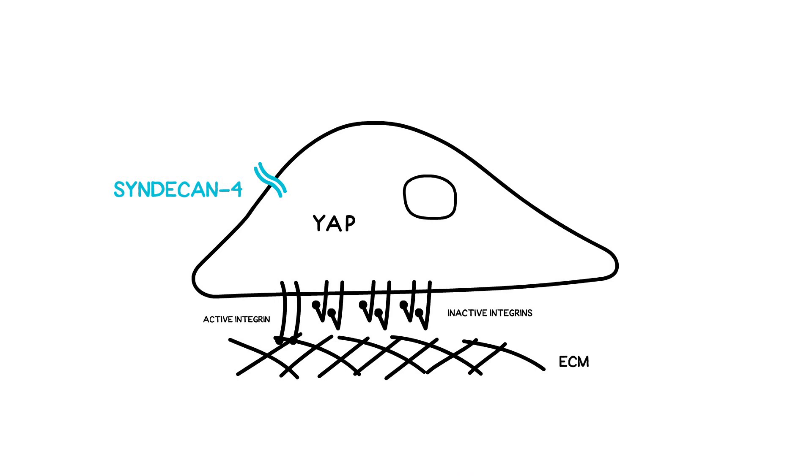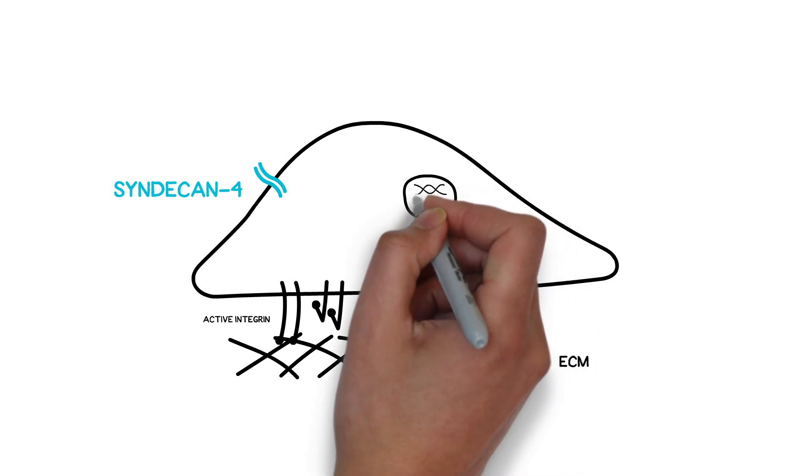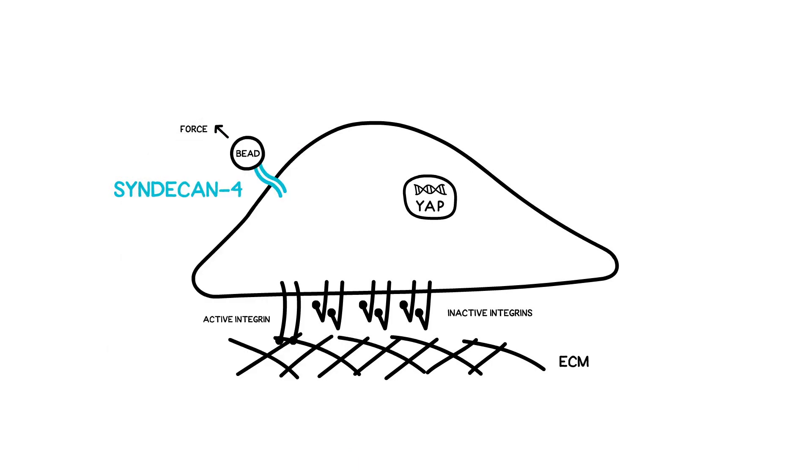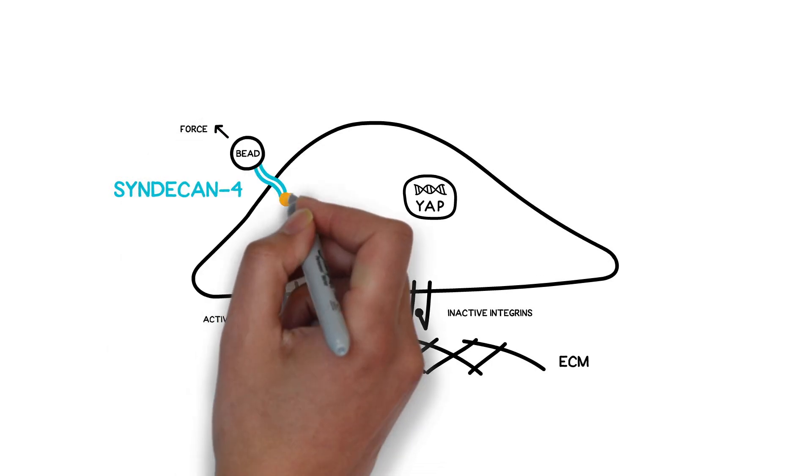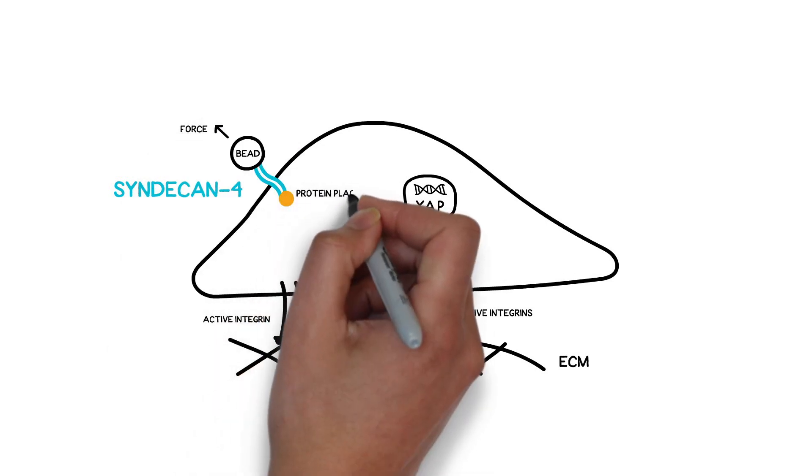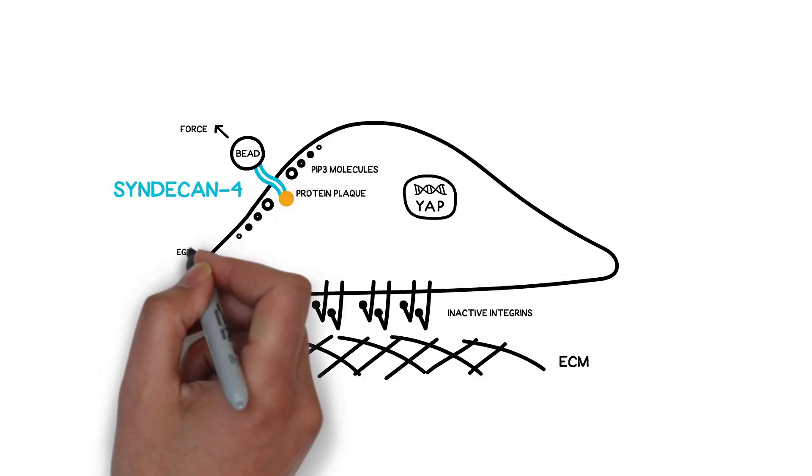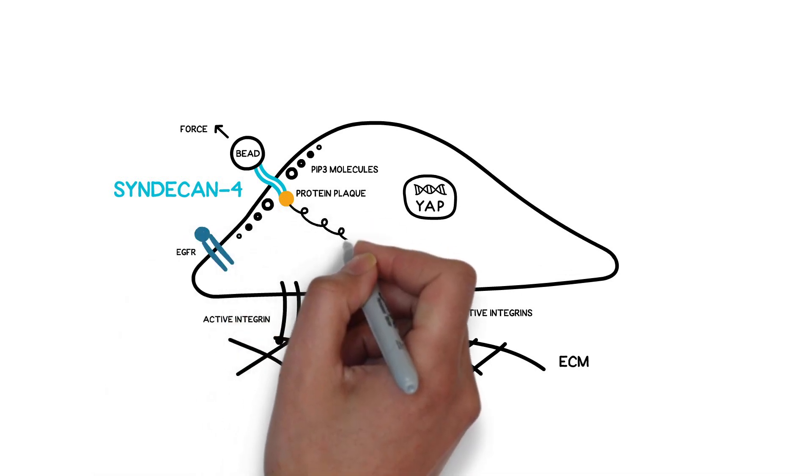Using magnetic beads to apply localized tension on syndecan-4, they discovered a global cell stiffening response through a mechanically activated cascade of events that involves the synergistic activation of epidermal growth factor receptors and integrins via PIP3.